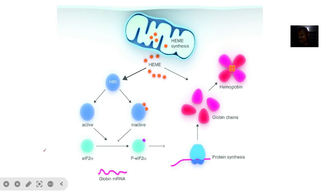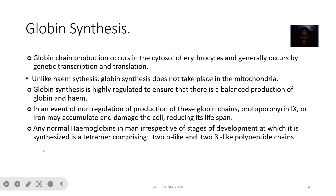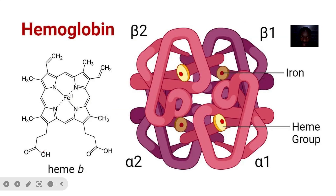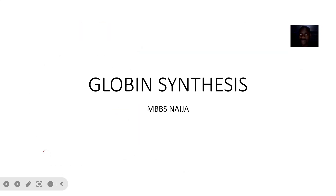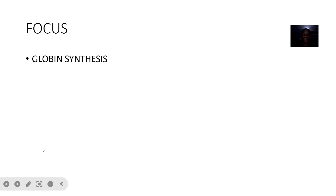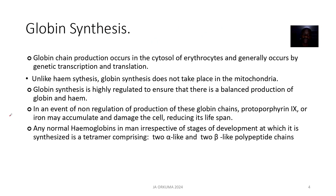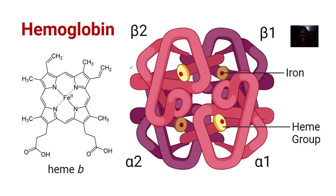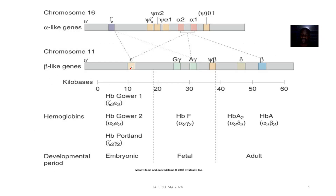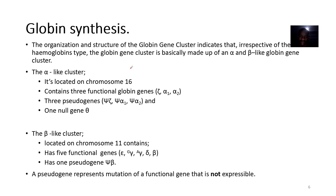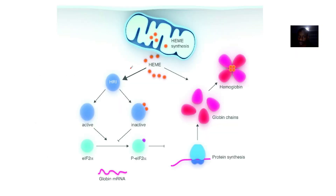Now we want to focus on the globin component. For globin synthesis — the making of the globin components of hemoglobin — globin chain production occurs in the cytosol of erythrocytes, that is, in the cytosol of red blood cells. As you can see in the picture, it's the cytosol.